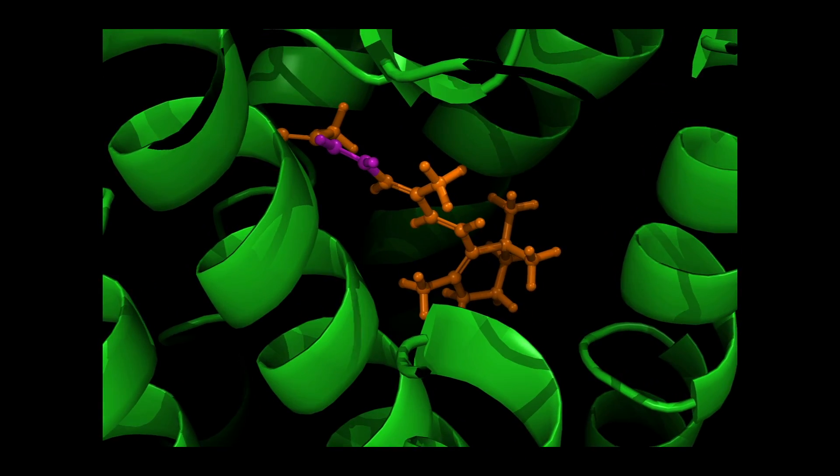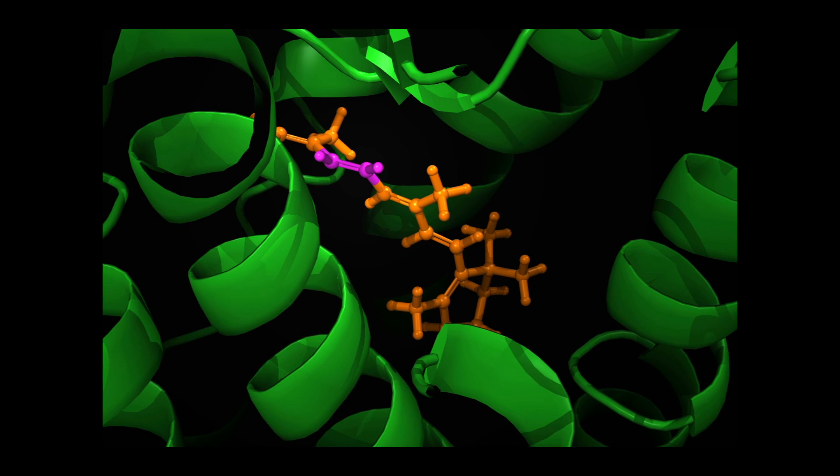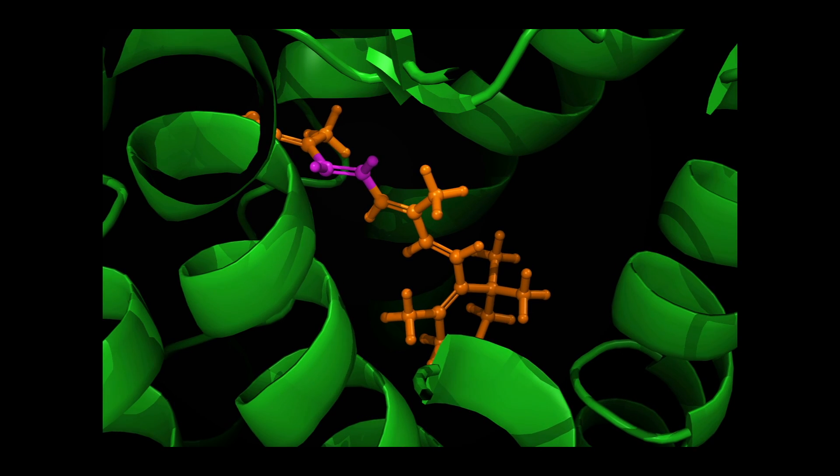When a retinal molecule absorbs light, one of its internal bonds, shown in purple, weakens, and part of the molecule begins to rotate around the weakened bond, pushing part of the opsin protein out of the way.